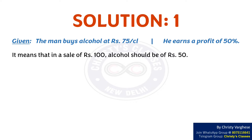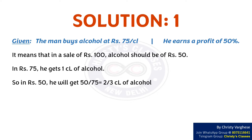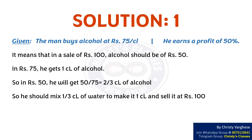In Rs. 75, he gets 1 centiliter of alcohol. So in Rs. 50, he will get 50/75, that is 2/3 centiliter of alcohol. So he should mix 1/3 centiliter of water to make it 1 centiliter and sell it at Rs. 100.